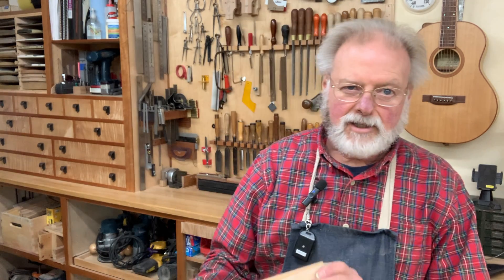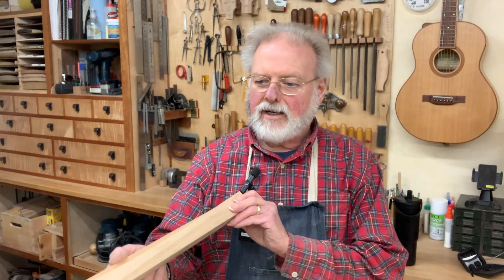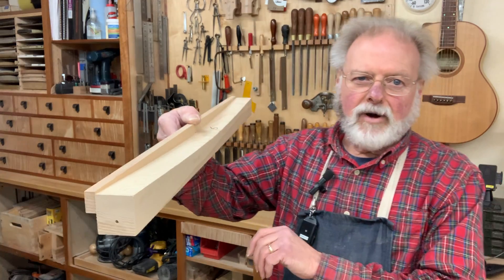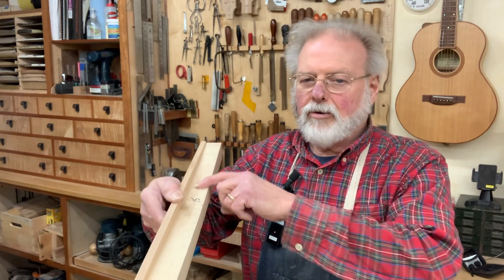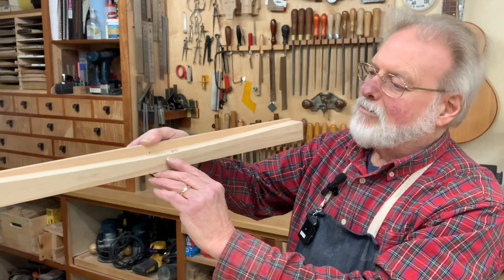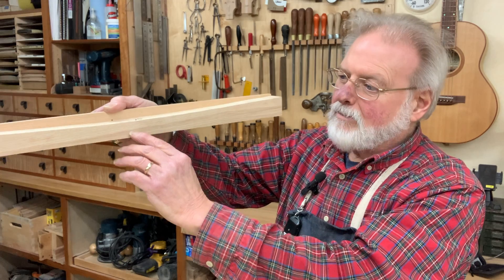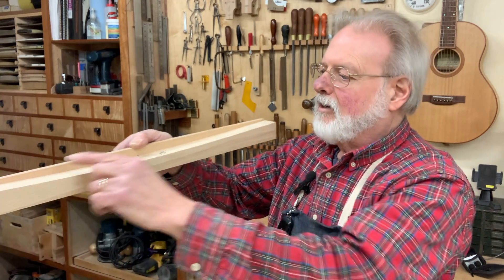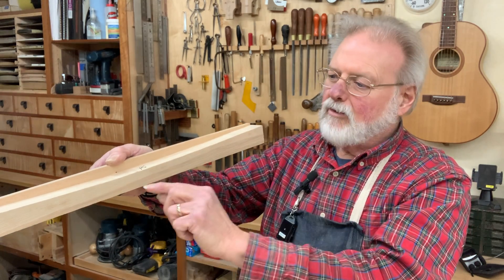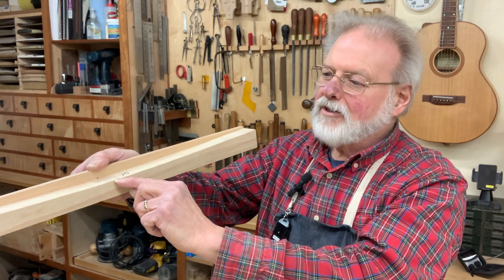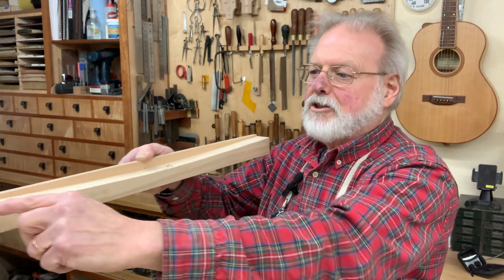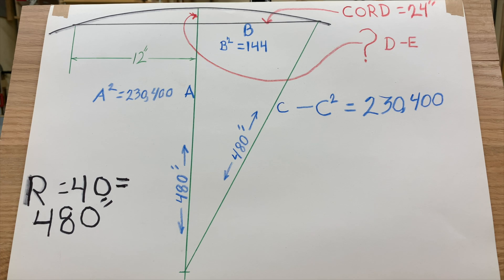The problem we're going to solve here today is: given the radius that you are going to create in your dish, what is the maximum distance that that radius drops down across a 24-inch span? We want to know how far it is from a straight line across there.